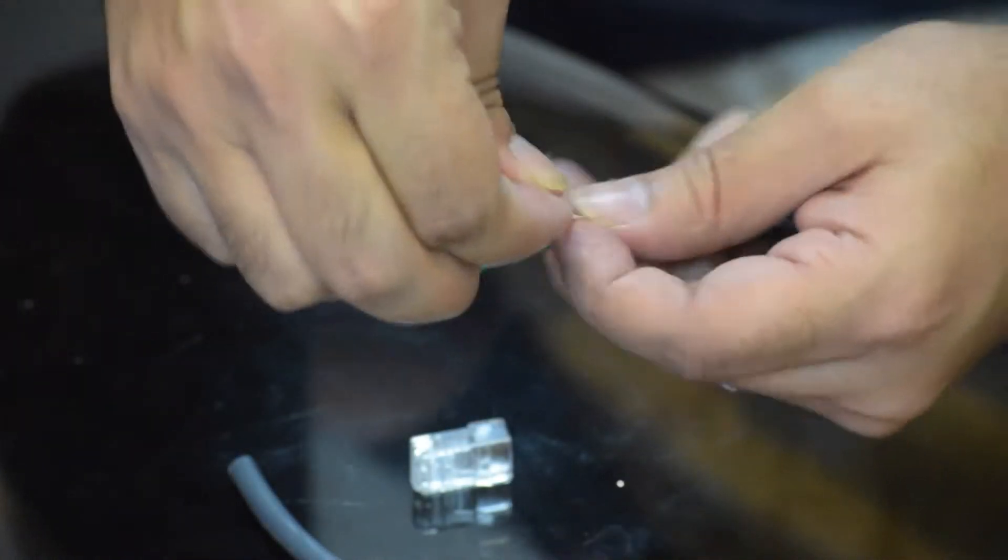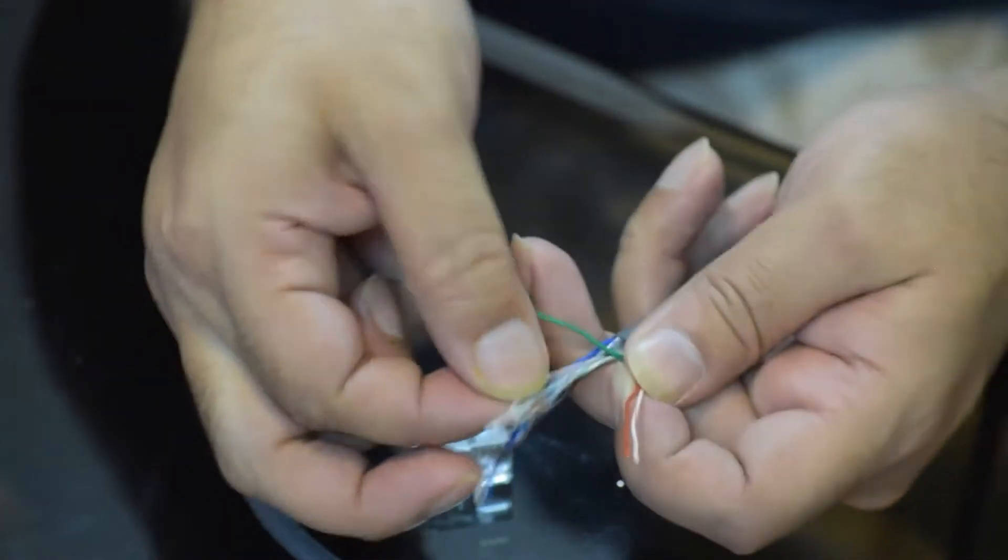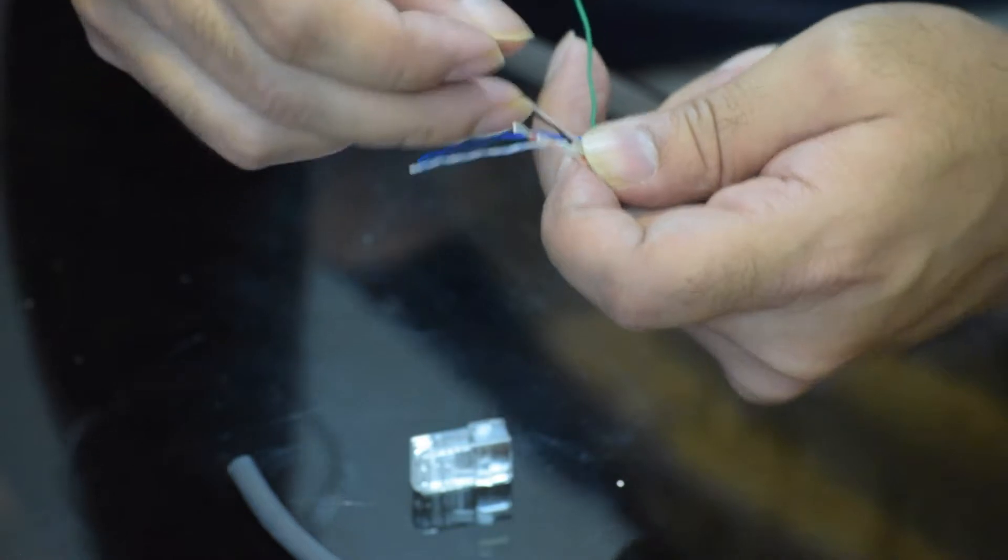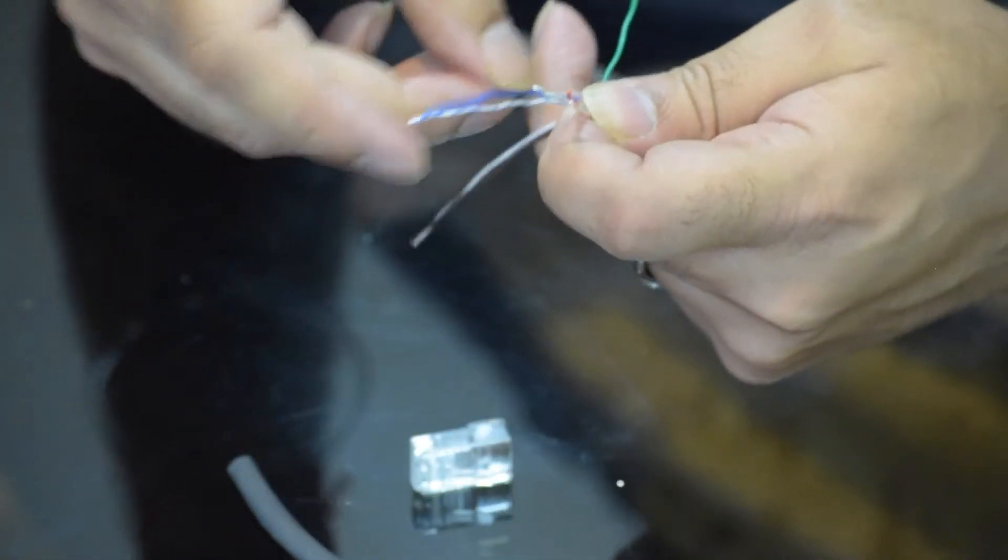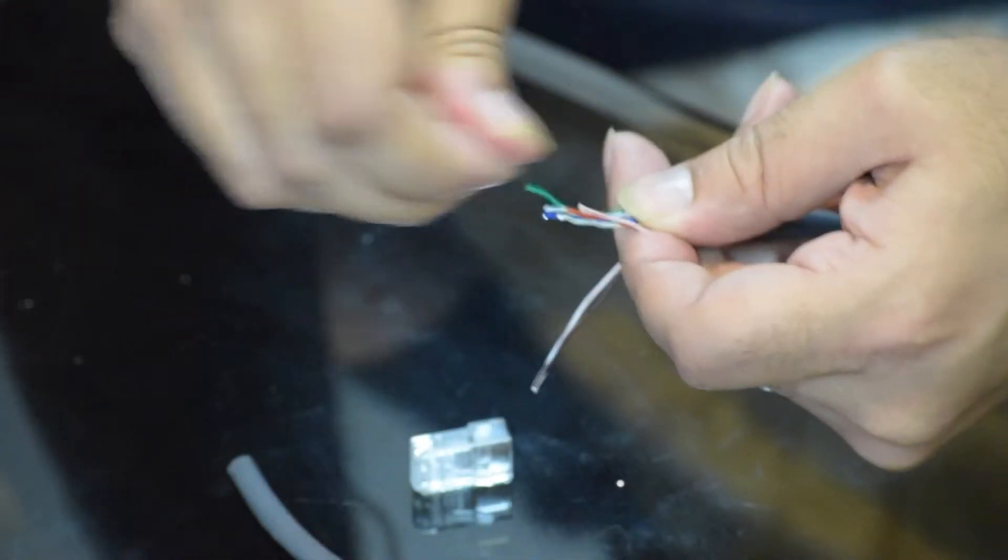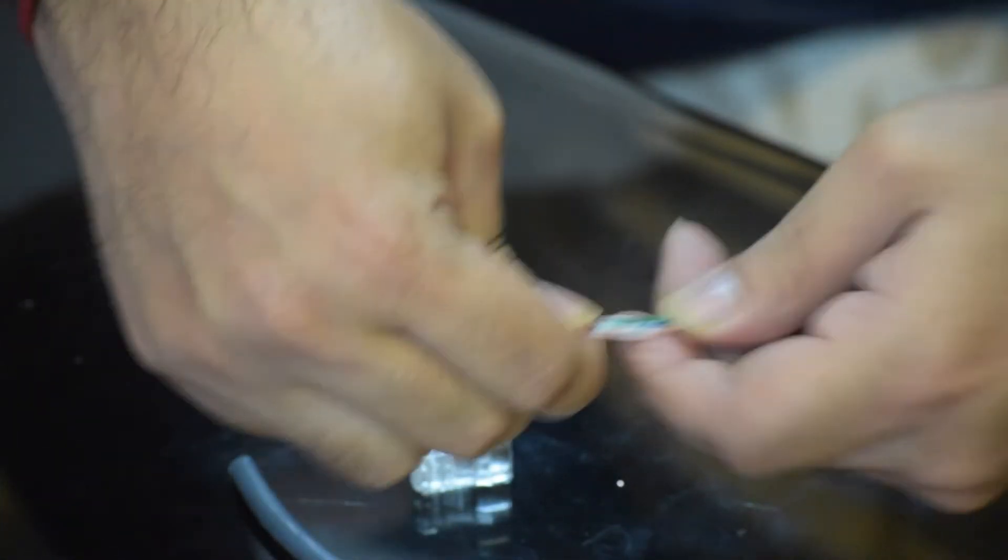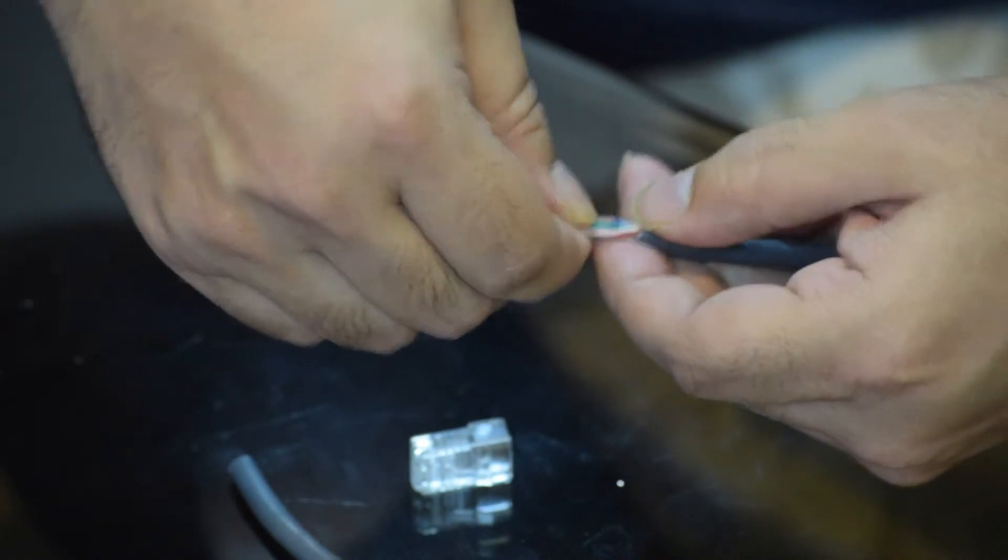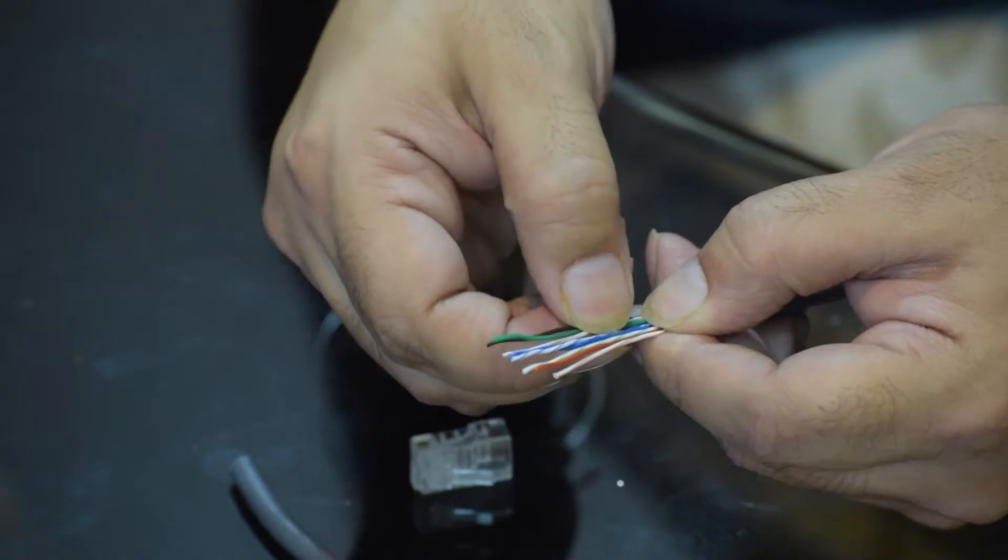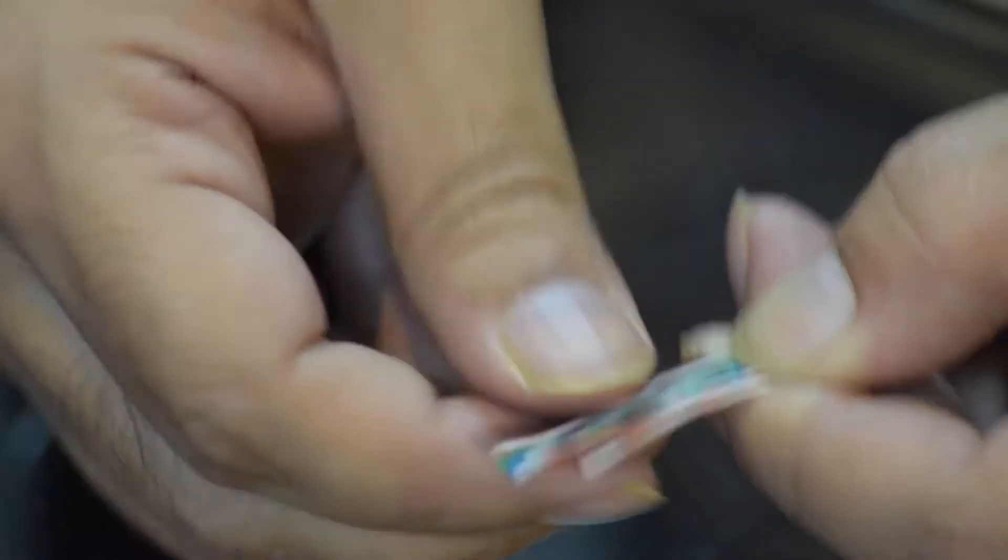So the color sequence is orange white, orange, green white, blue, blue white, then green, white brown, and brown. So once again orange white, orange, green white, green, blue, blue white, green, white brown, and brown.